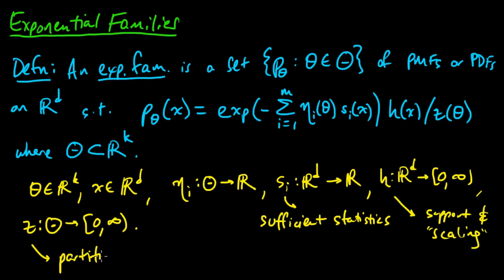And z is a very important function called the partition function. It's sort of trivial in one sense because it's just the normalizing constant for the distribution. For a given θ, the distribution is proportional to the numerator, and z is just the normalizing constant.